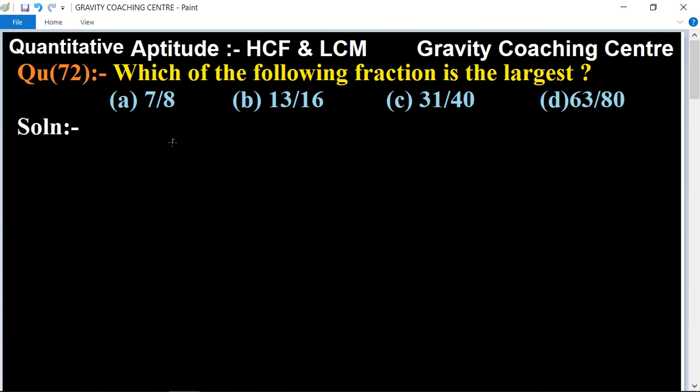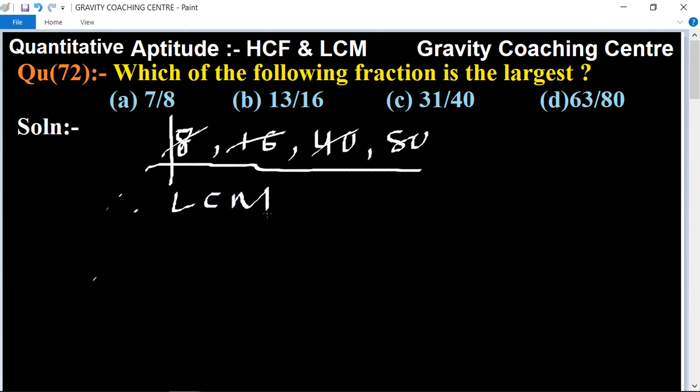First we will find the LCM of the denominator of all the options: 8, 16, 40 and 80. So 80 is divisible by 8, 16, and 40. Therefore LCM equals 80.